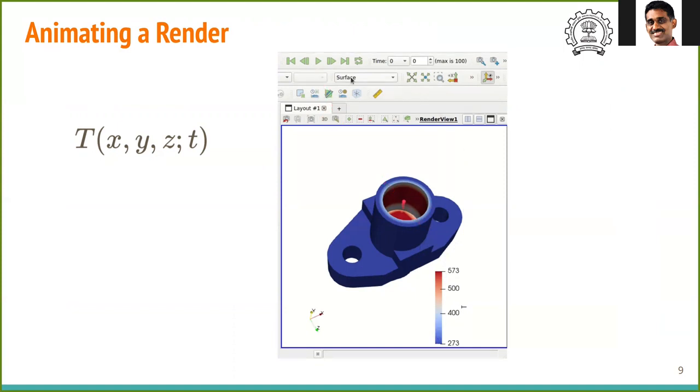Initially, only the inner surface is at 573 which is red in color, and the entire outer surface is at 273 which is blue in color. To see how heat diffuses in time, we use the play button here. The time of simulation is also displayed here.